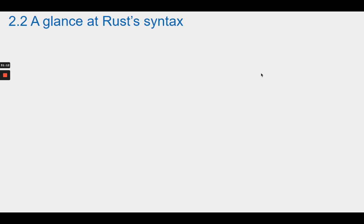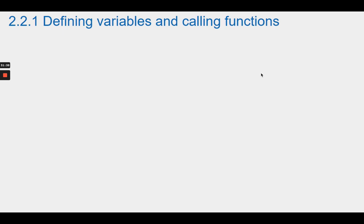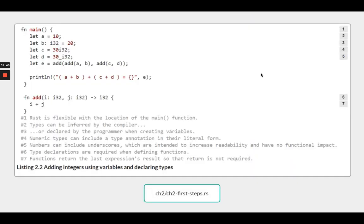Section 2.2 A glance at Rust's syntax. Rust is boring and predictable where possible. It has variables, numbers, functions, and other familiar things that you have seen in other languages. For example, it delimits blocks with curly brackets, uses a single equals sign as its assignment operator, and it is whitespace agnostic. Section 2.2.1 Defining Variables and Calling Functions. Let's look at another short listing to introduce some fundamentals — defining variables with type annotations and calling functions. Listing 2.2 prints 'A plus B equals 30' to the console. There are multiple syntactic choices for annotating data types to integers. Use whichever feels most natural for the situation at hand.